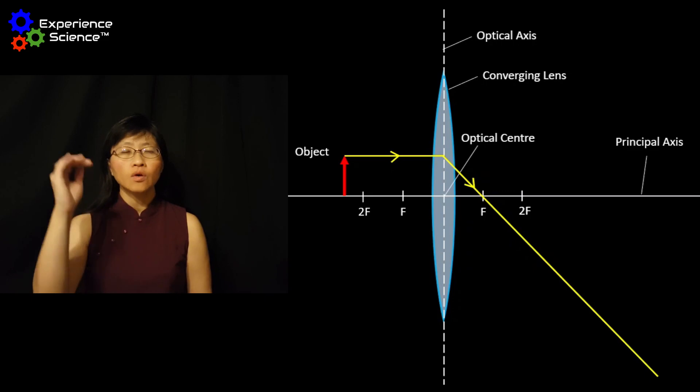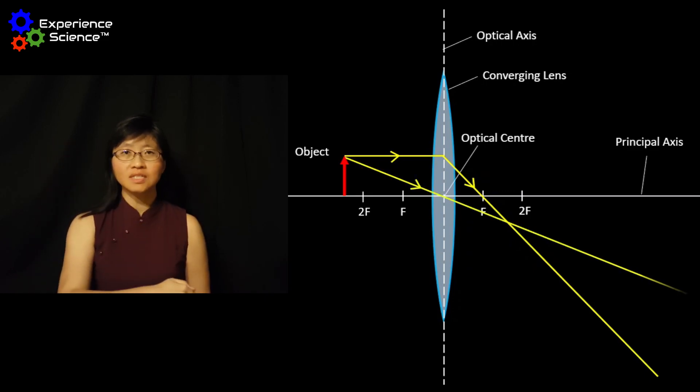The second ray will travel directly from the point source through the optical center of the lens.